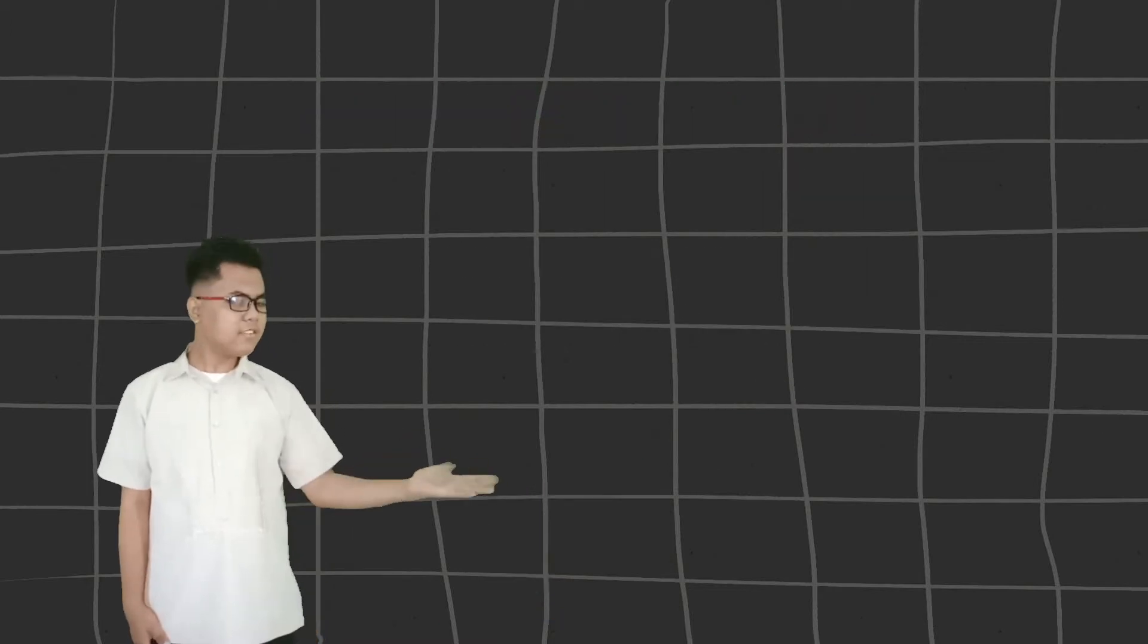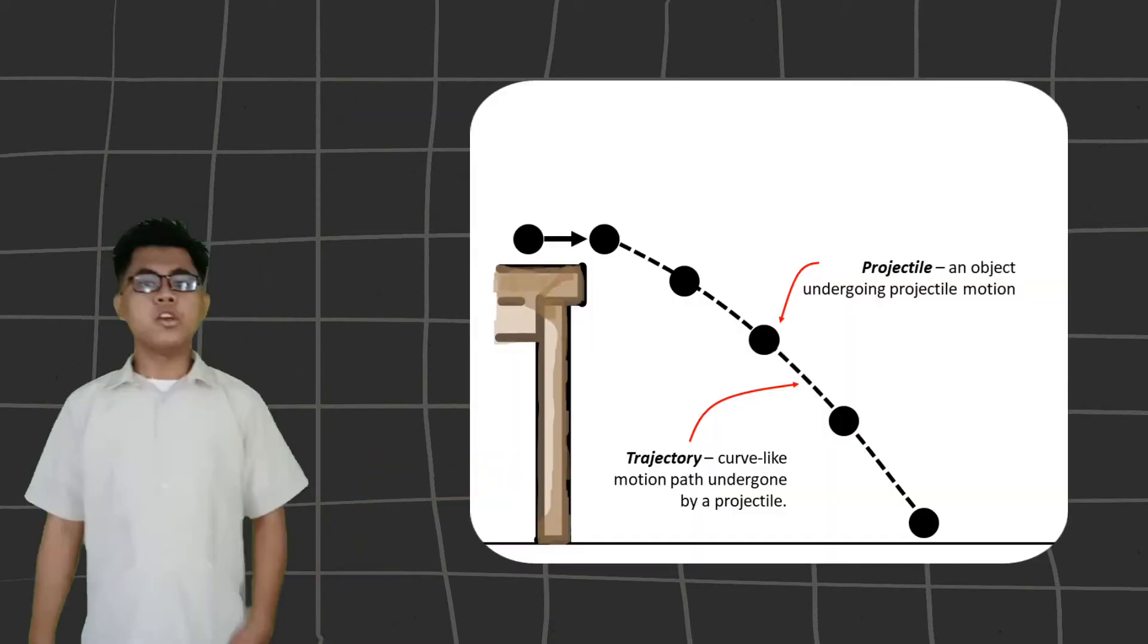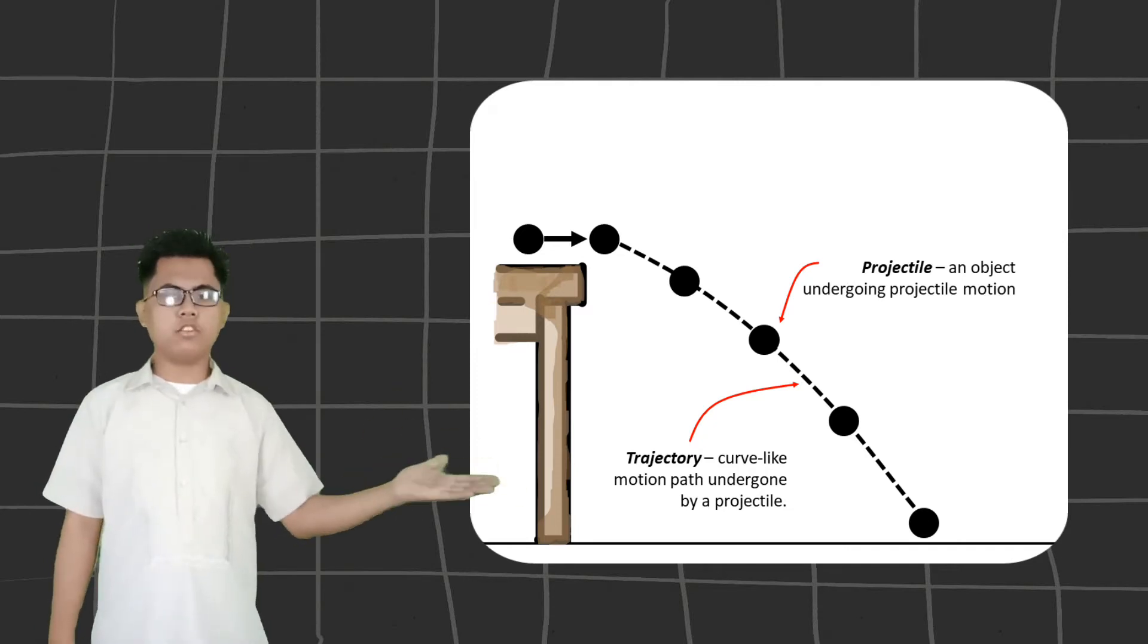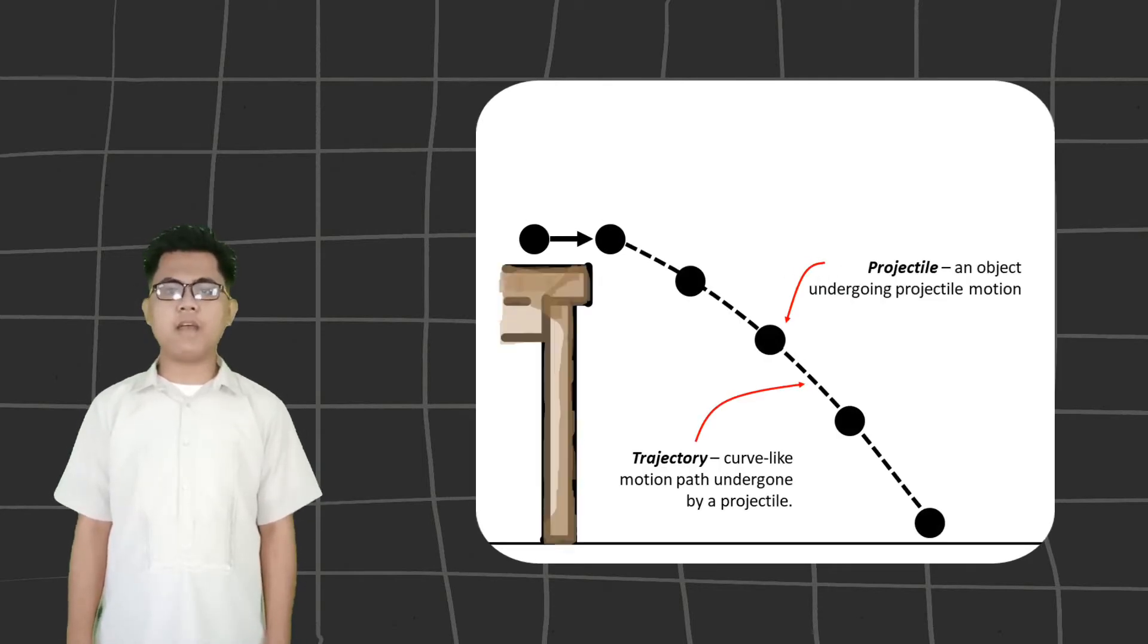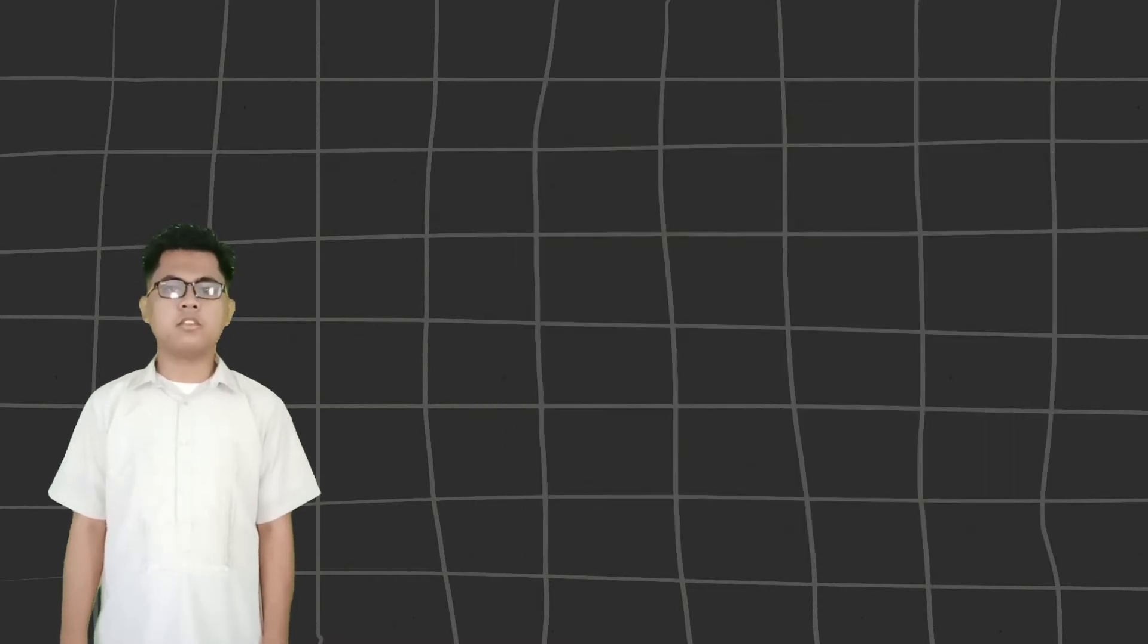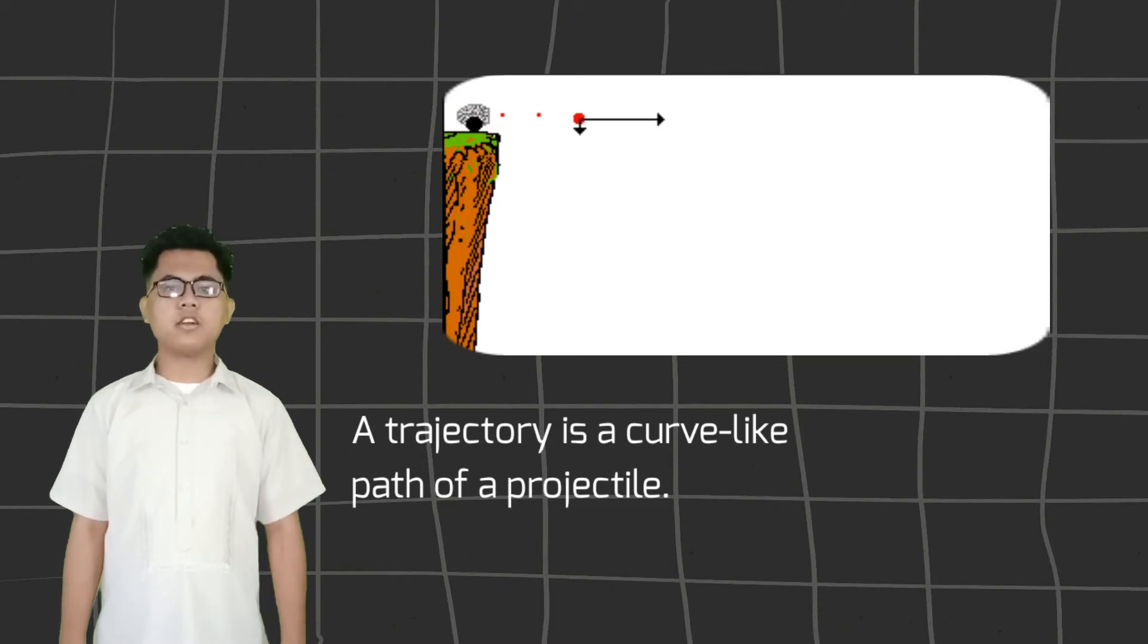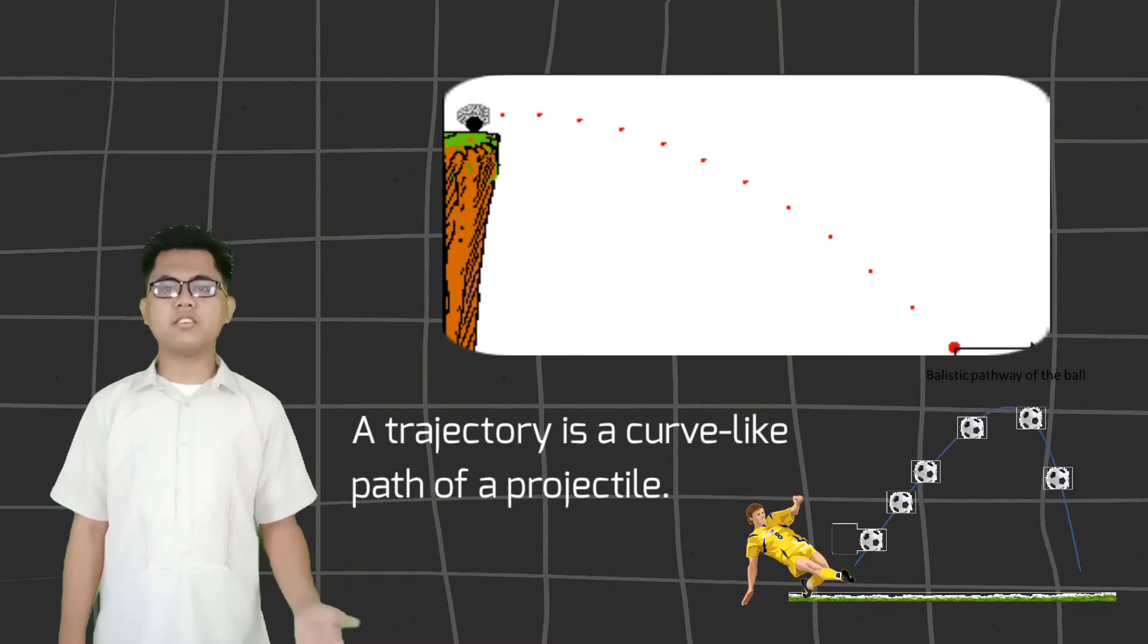For you to visualize, let us look at this diagram. Consider a ball being launched horizontally at the edge of a table. You will see the motion traveled by the ball before it hits the ground. And this is the trajectory of the ball. A trajectory is the curved line motion path of a projectile.